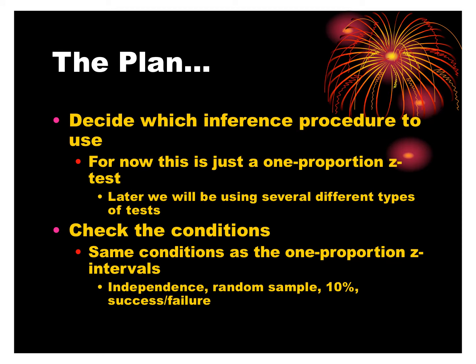Right now, we only know two inference procedures: a one-proportion z-test and a one-proportion z-interval. Later, in Chapter 22, we'll do a two-proportion z-test and interval. Chapter 23 covers a one-sample t-test for means. Chapter 24 covers a two-sample t-test for difference of means and a matched pairs t-test for the mean difference. Chapter 26 covers a chi-squared test for categorical data.